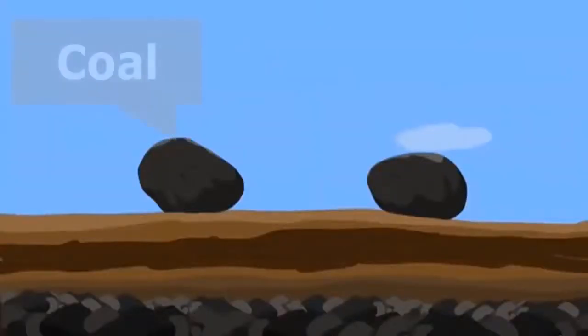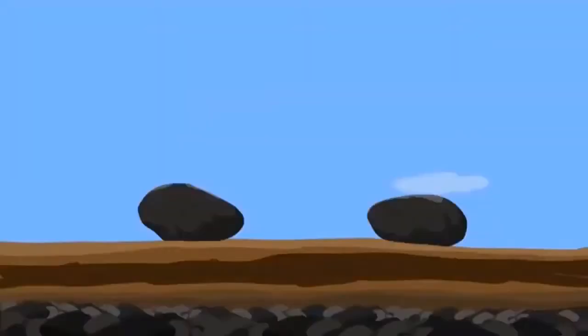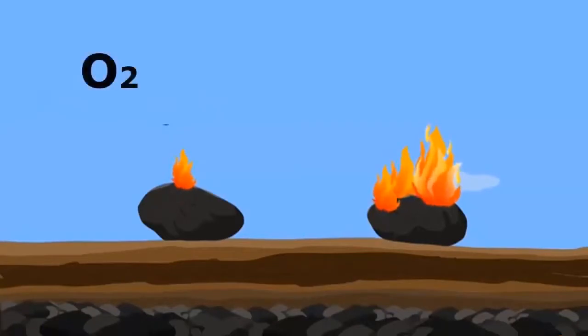Coal is a typical example of a burning chemical reaction, similar to natural gas methane. Coal is carbon, a black chemical substance. When it is burned, it chemically reacts with the oxygen in the air and turns into CO2, carbon dioxide.